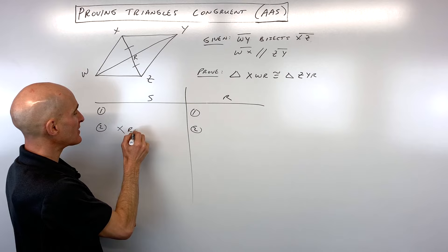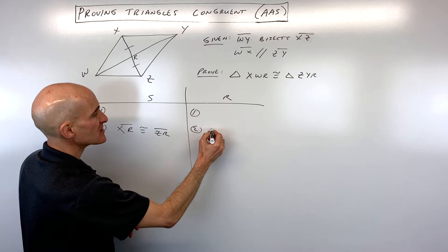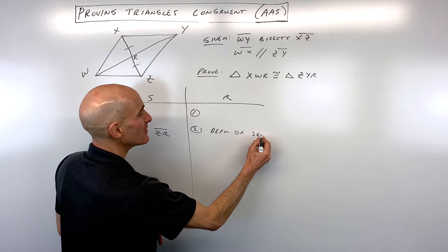And let's make that a step in our proof. Segment XR is congruent to segment ZR, right? And that's because of the definition of segment bisectors. So I'm just abbreviating a little bit here.